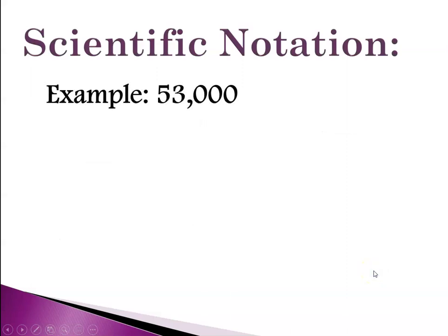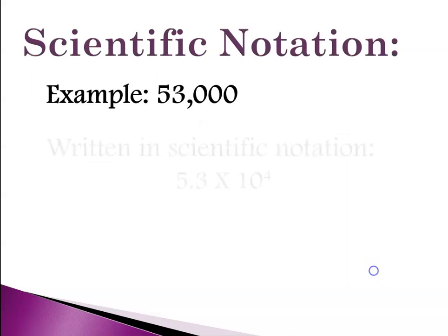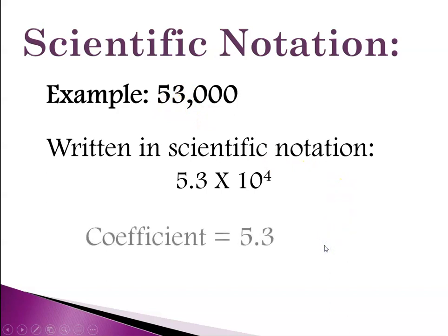And here, one more example, 53,000. We would rewrite that. We're moving the decimal one, two, three, four. So 5.3 times ten to the four. And in this case, the coefficient is 5.3, and the exponent is four because we bounced the decimal four times.